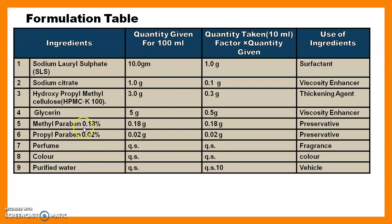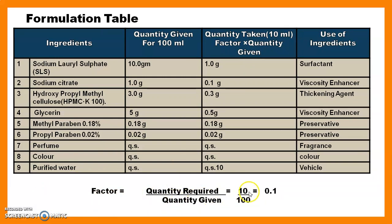The formulation table lists ideal ingredients and their weights as prescribed in a specific book such as the Indian Pharmacopoeia or British Pharmacopoeia. The ingredients are prescribed for 100 ml, but today we prepare only 10 ml. We calculate a factor: quantity required divided by quantity given — that is 10 divided by 100, giving a factor of 0.1. Multiplying each quantity by 0.1, for example 0.1 × 10 = 1 gram, gives the required amount for 10 ml.